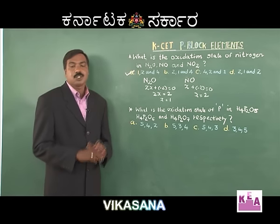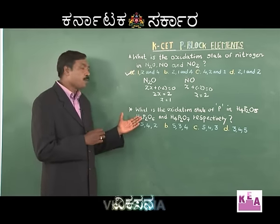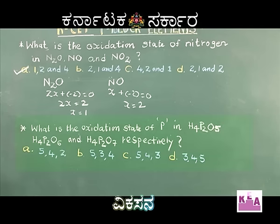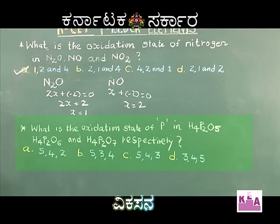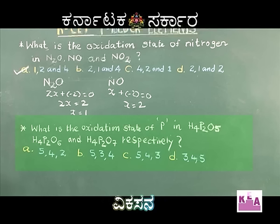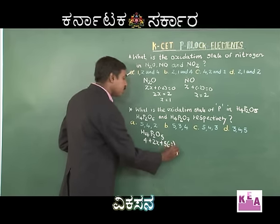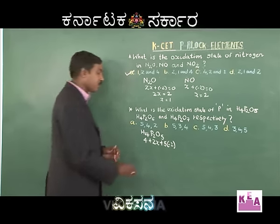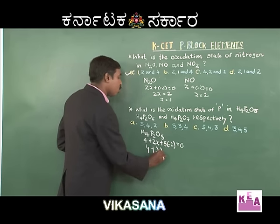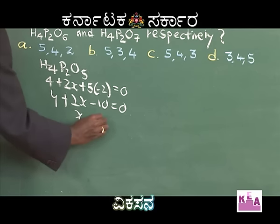Coming to the next question — since you have understood the pattern, I hope you will try on your own, but let me help you out. What is the oxidation state of phosphorus in the various oxy acids of phosphorus written on the board? For H₄P₂O₅: hydrogen is +1, so 4(+1) + 2x + 5(-2) = 0, giving 4 + 2x - 10 = 0, and x = +3.